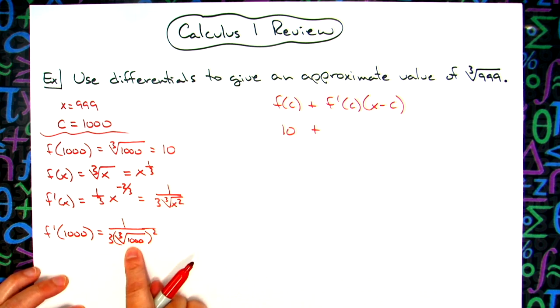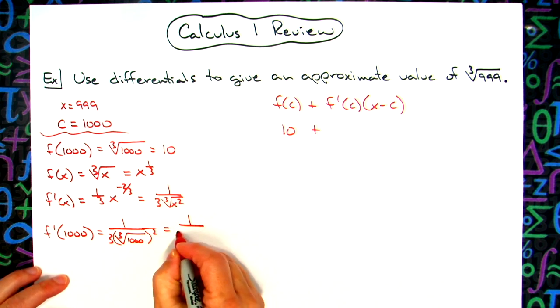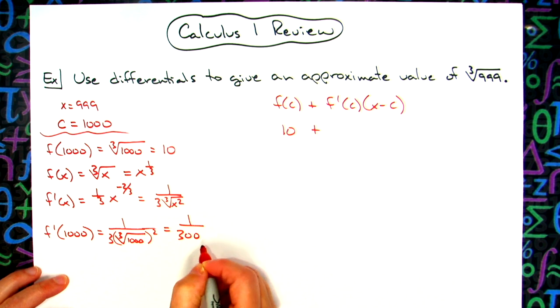So cube root of 1,000 is 10. 10 squared is 100. 100 times that 3 is going to be 300. So then I'm going to have a 1 over a 300 right there.